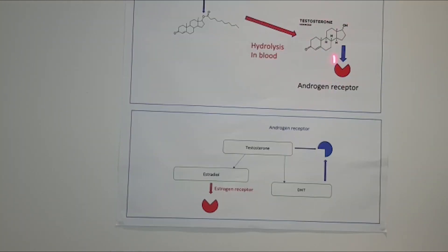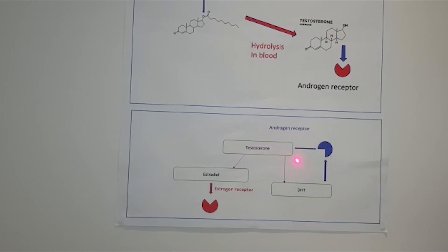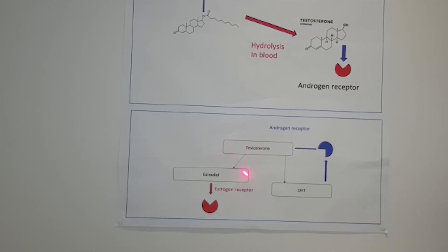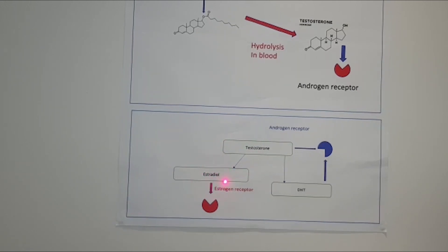Once we have this free testosterone hormone in the blood it's free to act on the androgen receptor. It can further undergo modification by the enzyme 5-alpha reductase to produce dihydrotestosterone or DHT, which is much more potent than testosterone and can also act on the androgen receptor. Testosterone can also be modified by the aromatase enzyme, predominantly in the fat tissue, to produce estradiol which can then act on the estrogen receptor. Estrogen is present in men and it's important for our bone health and our mental health.